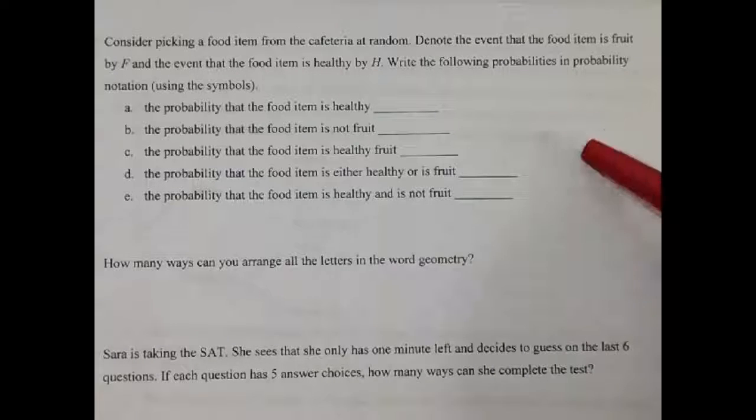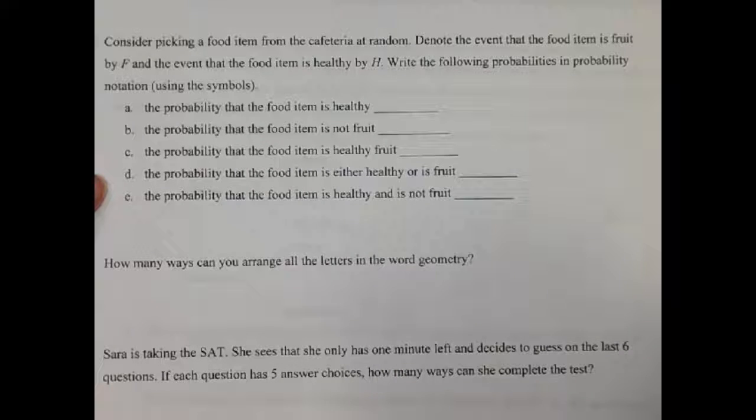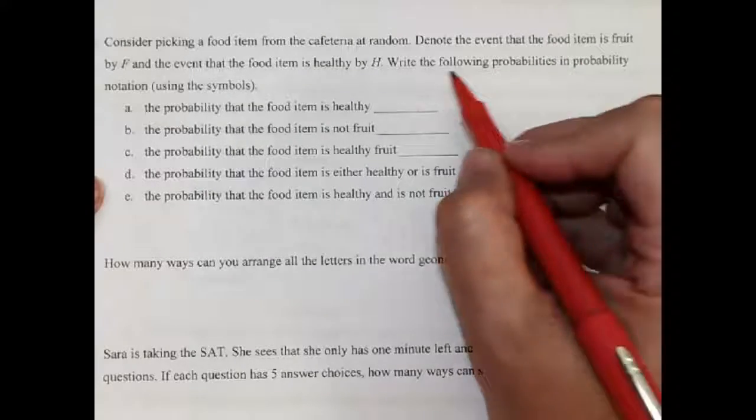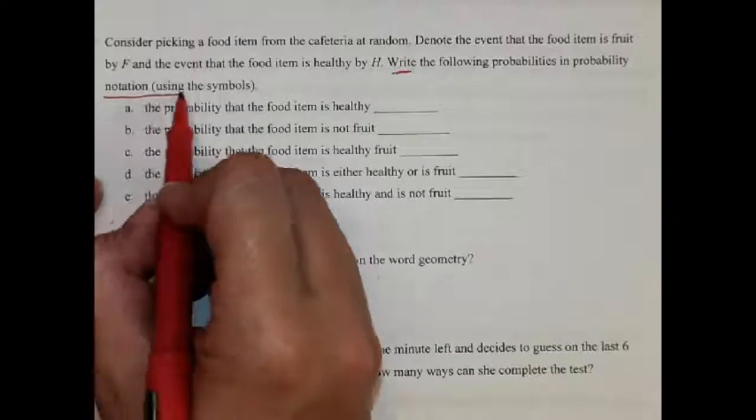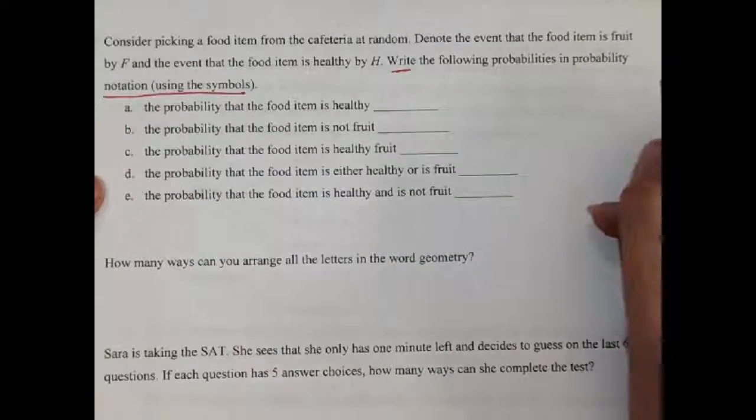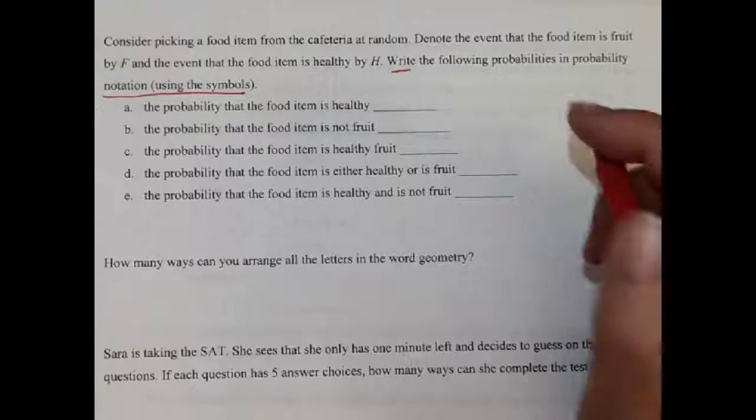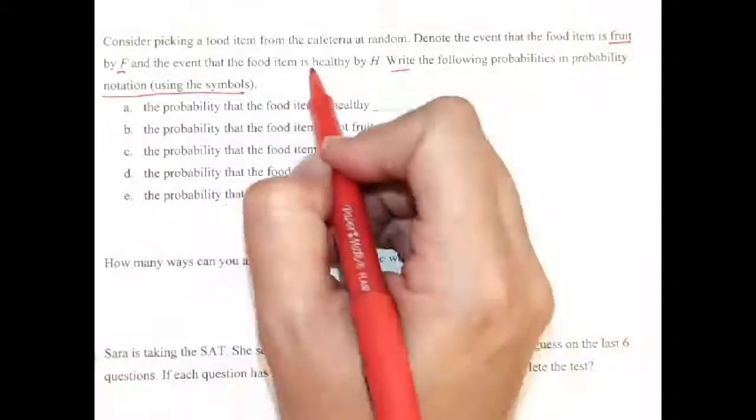Okay, we're going to do this question. It's number 4 on test A or number 6 on test B. And what it's asking us to do is write the probabilities using the notation, using the symbols. So we're not giving numbers, we're actually writing this out with the symbols. And it tells us that we're going to use fruit is F and healthy is H.